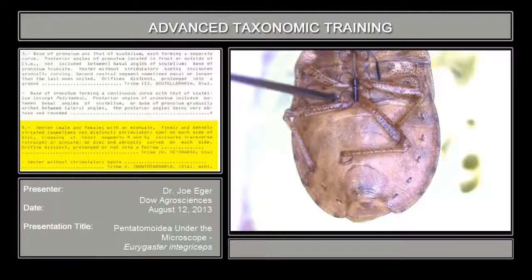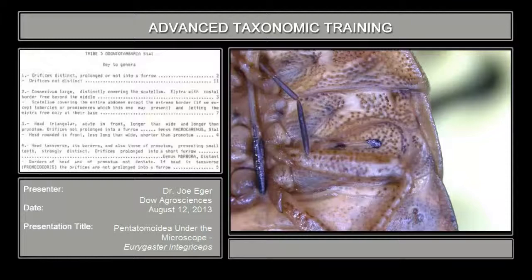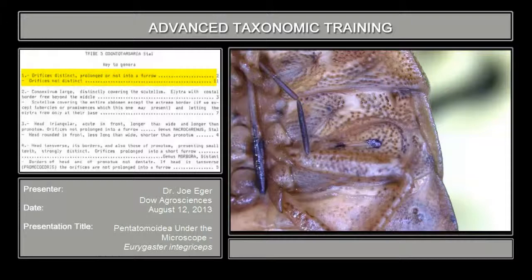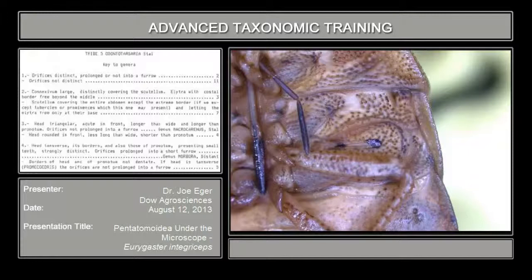We looked at the stridulatory spots earlier on a specimen of Pachycorinae. This bug doesn't have those stridulatory spots. Couplet number four asks whether they have the spots or whether they don't, and basically this one doesn't. So it's an Odontotarsinae. That takes us to the key to genera of tribe five — Odontotarsinae. The first couplet: orifices distinct, prolonged or not into a furrow, versus orifices not distinct. Looking at this bug, the metapleural ostiole and that orifice is very distinct. So that takes us to couplet number two.